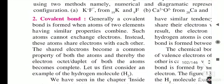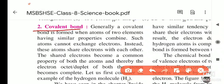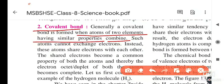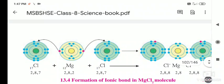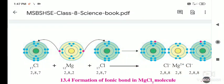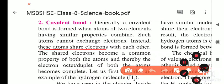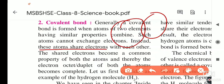Today we will see how covalent bonds are formed. The second type of bond is a covalent bond. A covalent bond is generally formed when atoms of two elements having similar properties combine. Such atoms cannot exchange electrons — unlike in sodium chloride or magnesium chloride where electrons are exchanged. Instead, in a covalent bond, the atoms share their electrons with each other.